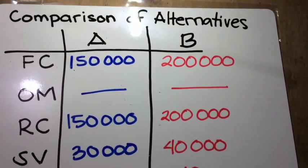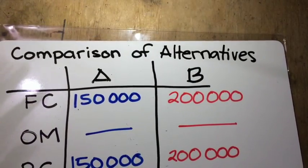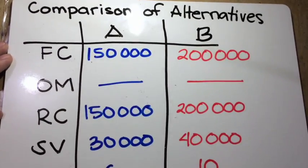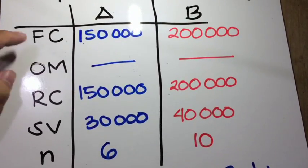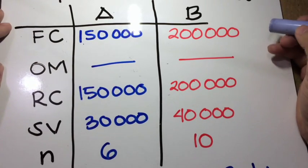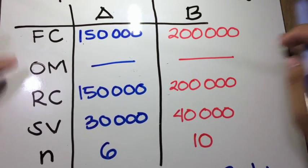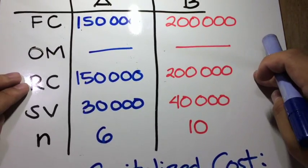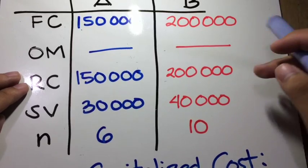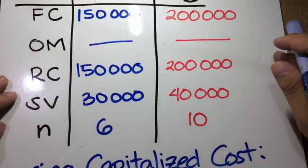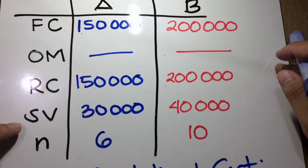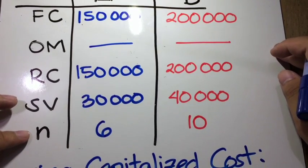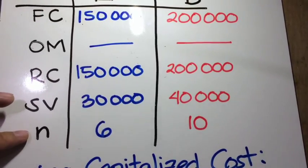One application of annual cost and capitalized cost is when we compare alternatives. Let's say we have two machines, A and B, and we have here the data for the machines. The first cost of machine A is $150,000 and the first cost of machine B is $200,000. They don't have an operating cost. The replacement cost is equal to the first cost for each machine. The salvage value is $30,000 for machine A and $40,000 for machine B, and the lifespan of each machine is 6 and 10 years respectively.